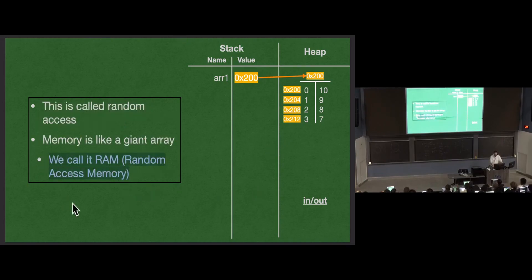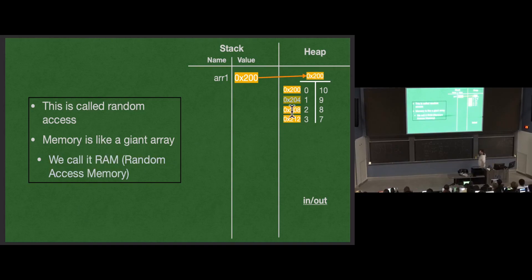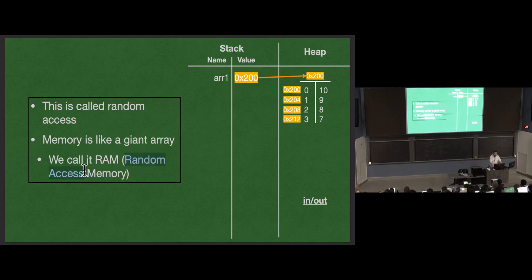This is why we call memory RAM — random access memory. It's one giant array, and we call it random access because we can say 'I have a memory address,' which is effectively an index, 'give me the value at this memory address.' It's just one giant byte array. We have the ability to randomly access any byte in memory, as long as we're allowed to — the operating system will stop us if we ask for memory outside of what our program has been allocated.